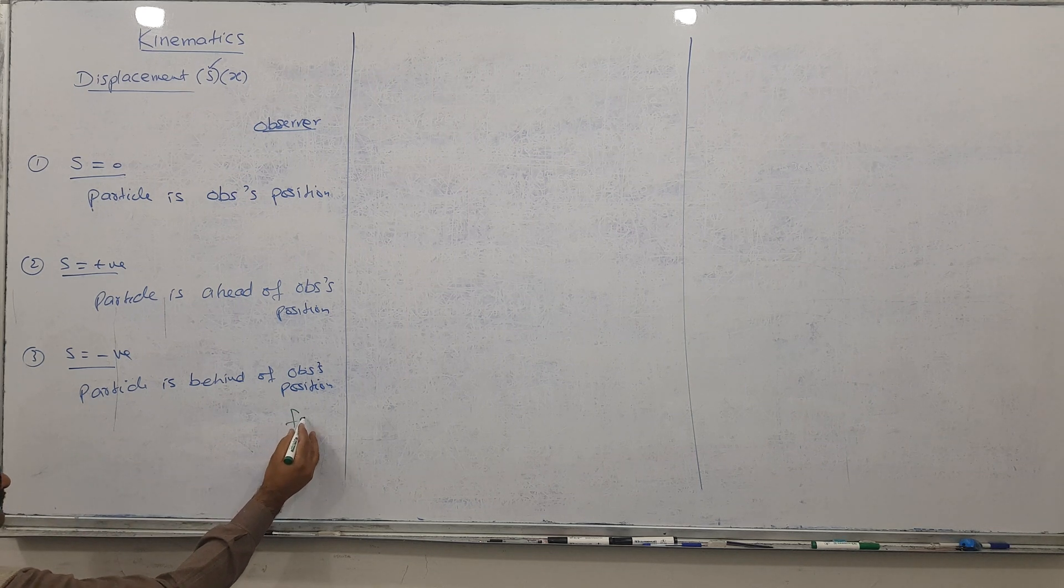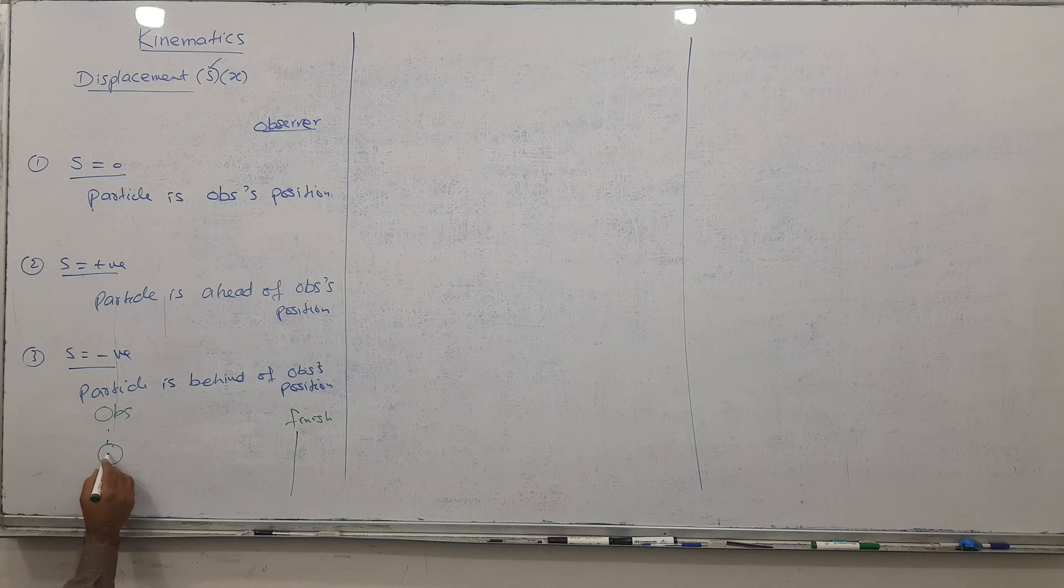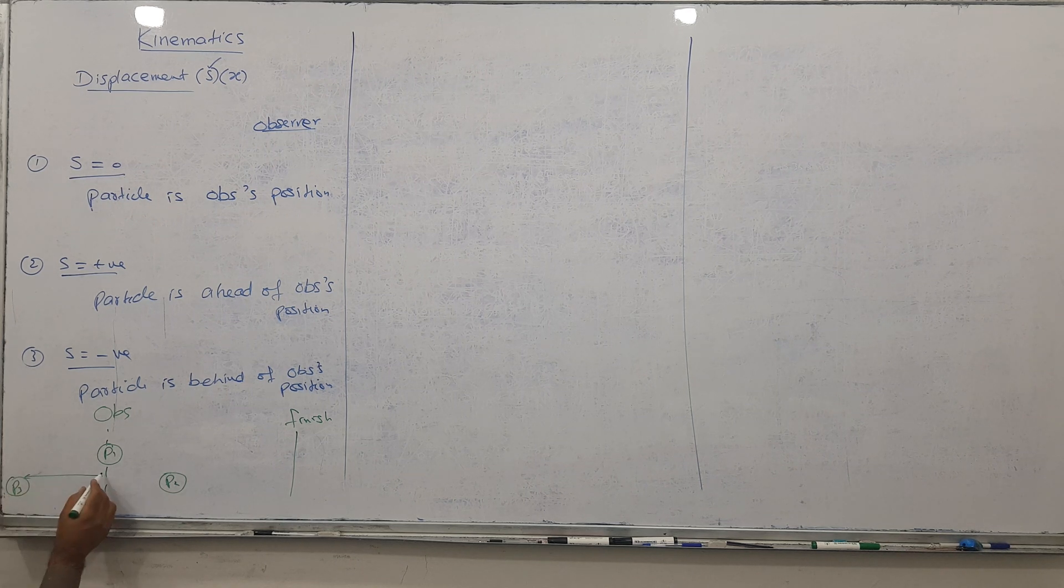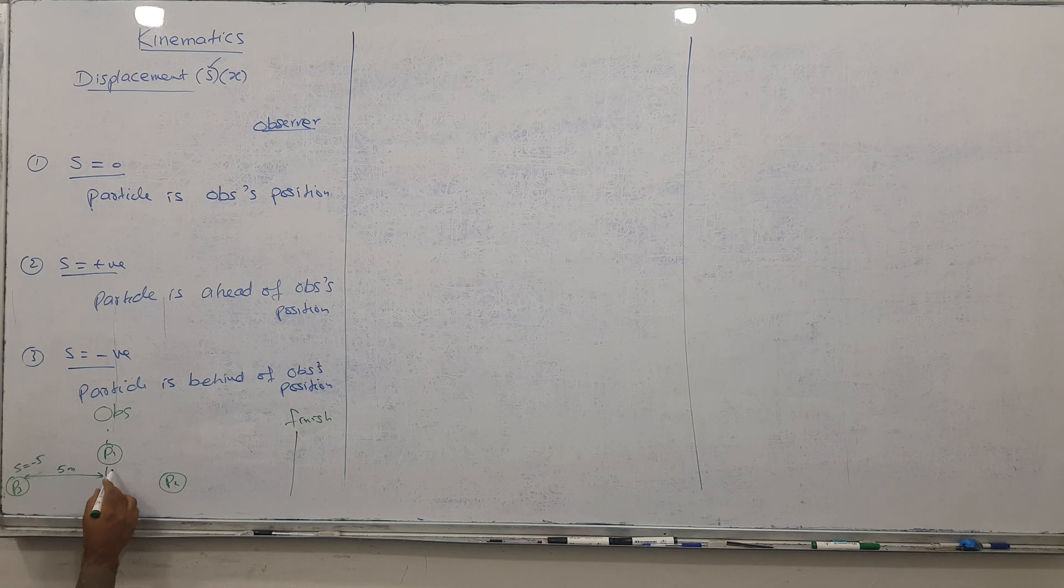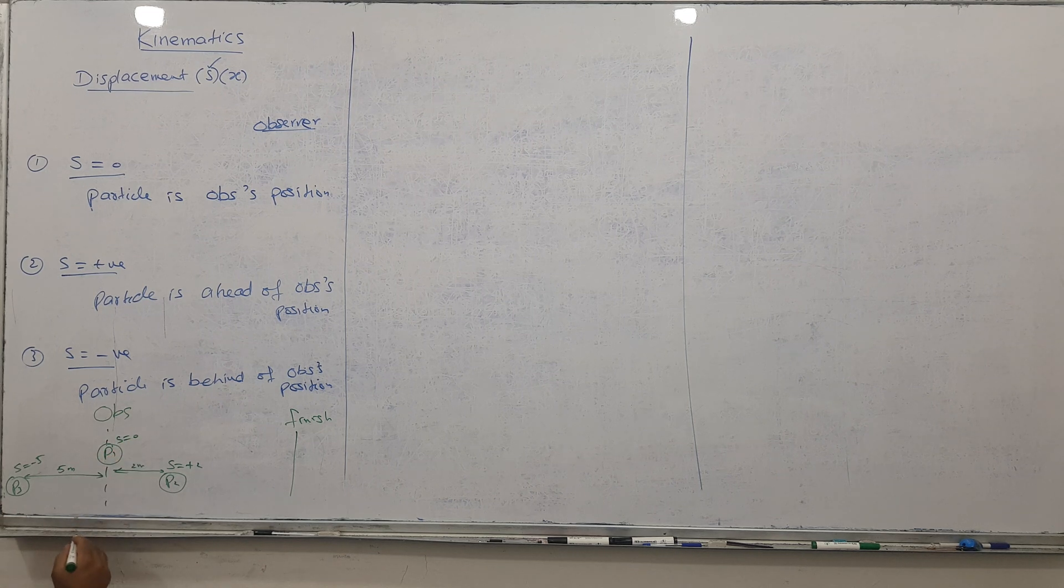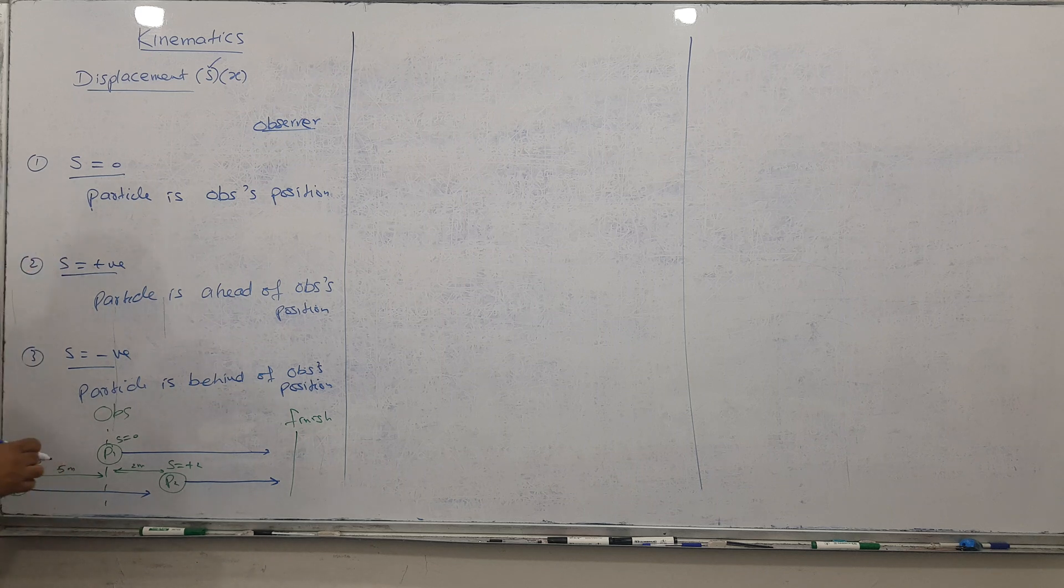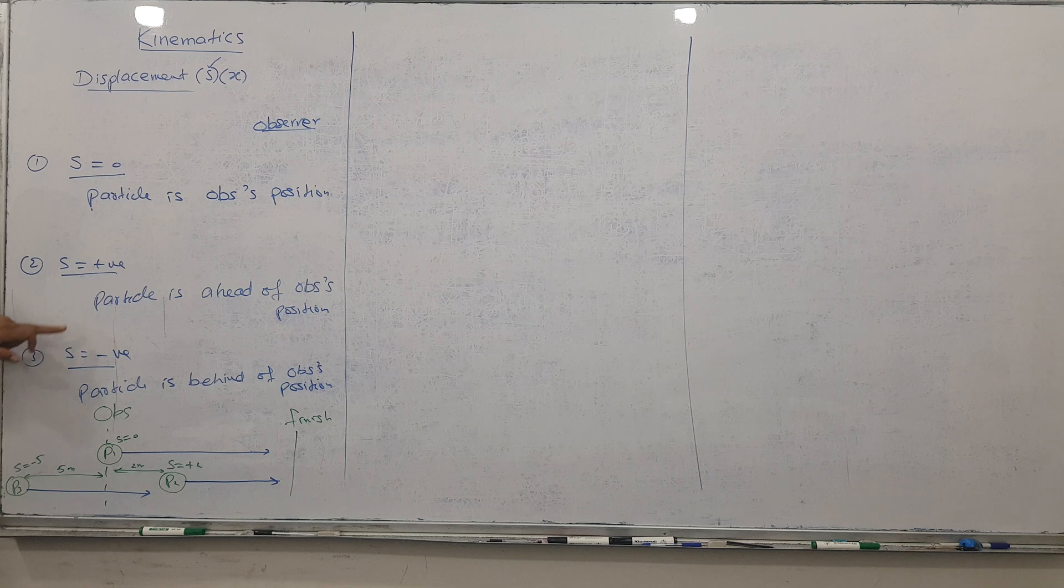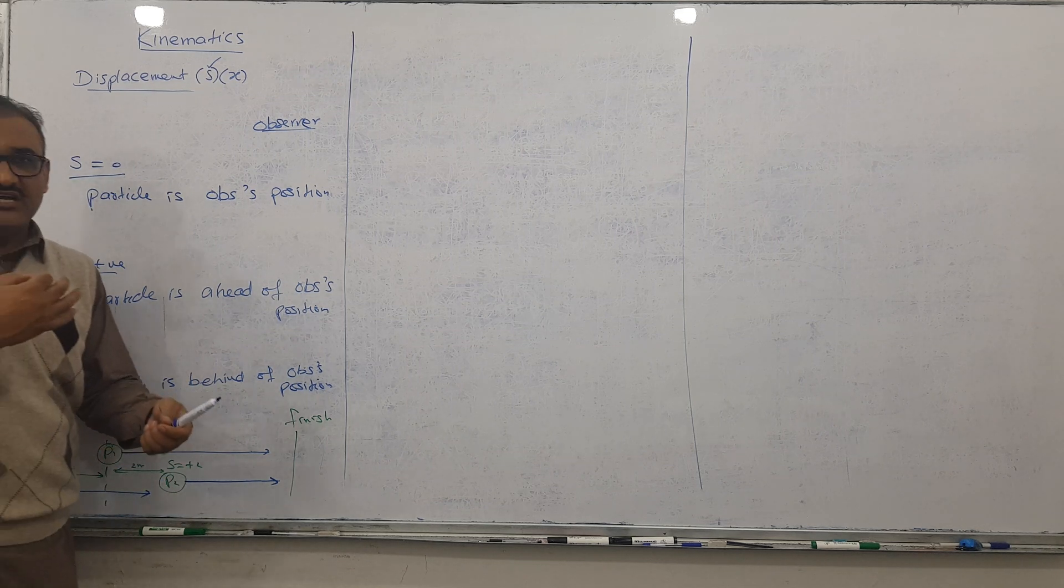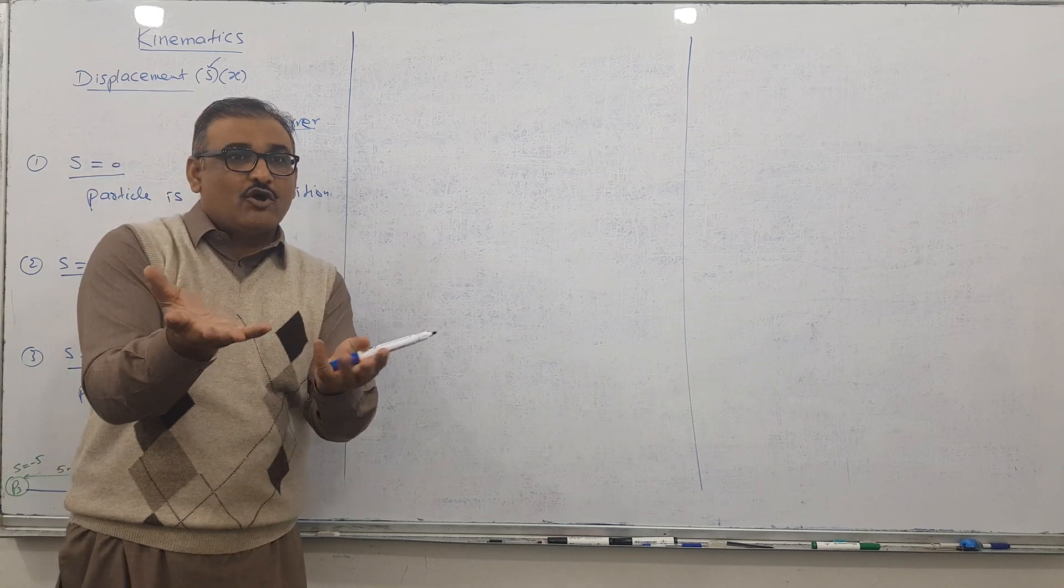Let's talk about an example. This is a finish line and this is a starting point. The observer is standing here. One particle is standing beside, called P1. One is here, P2, and one is behind, P3. P3 is five meters behind, so s is minus five. P2 is two meters ahead, so s is plus two. And P1 is standing beside the observer, so s equals zero.